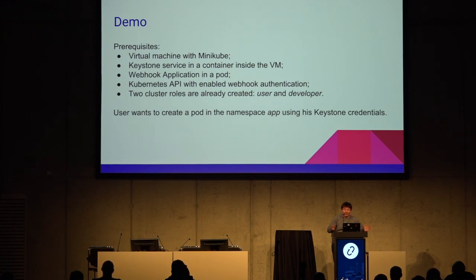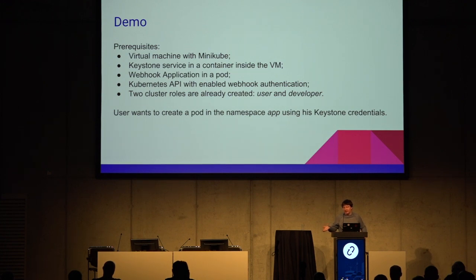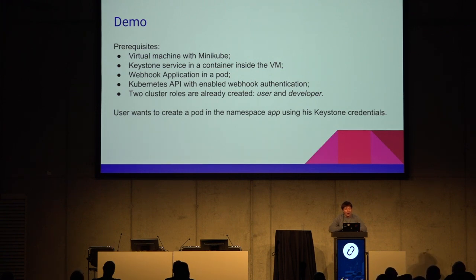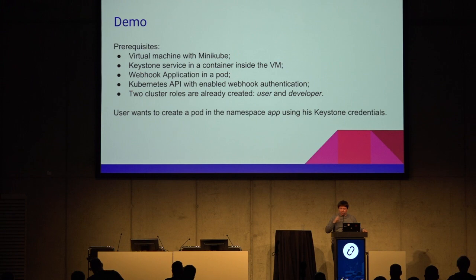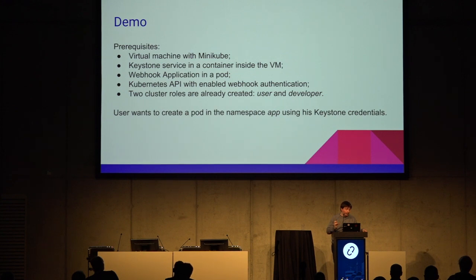Now I want to show you a demo. The demo presents a workflow where a user wants to create a pod in their namespace 'app' using Keystone credentials — which is more or less the same as the sequence diagram, but this is reality. The prerequisites: I created a small deployment with Minikube, deployed a Keystone server in a container — we don't need a full OpenStack deployment for this demo, just Keystone. I started the webhook application in a pod and enabled webhook authentication in the Kubernetes API.